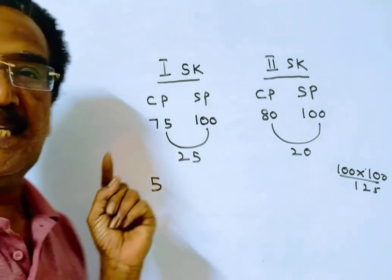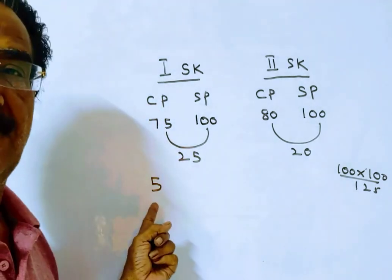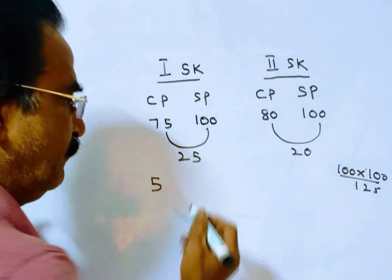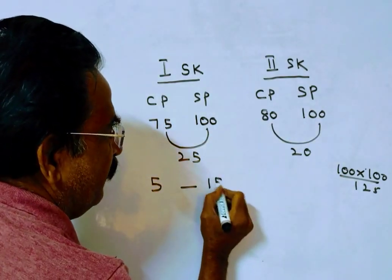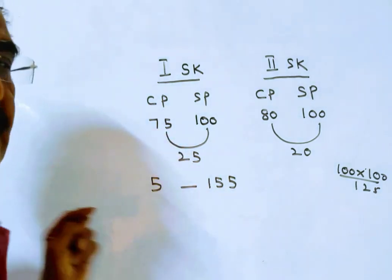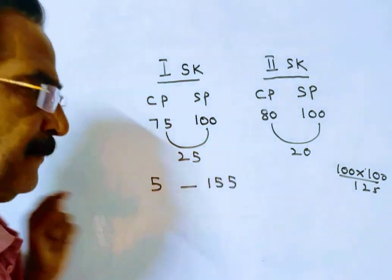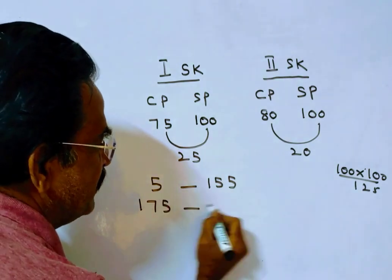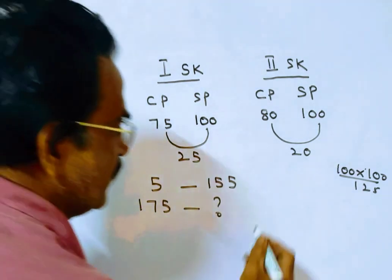If the difference is 5, sum of the cost price becomes 155. But it is given the difference between the two shopkeepers is 175. If 175 is the difference, what is the sum of the cost price?